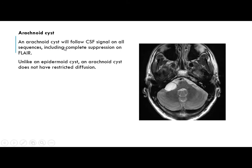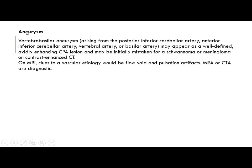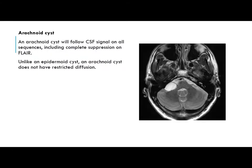Arachnoid cysts will follow CSF signal on all sequences, including complete suppression on FLAIR. This is the key distinguishing point from epidermoid cysts — unlike epidermoid cysts, arachnoid cysts do not show restricted diffusion. On axial T2, there is a well-defined homogeneous mass in the right CP angle with CSF signal intensity. We should obtain diffusion and FLAIR images to confirm suppression on FLAIR and no diffusion restriction.